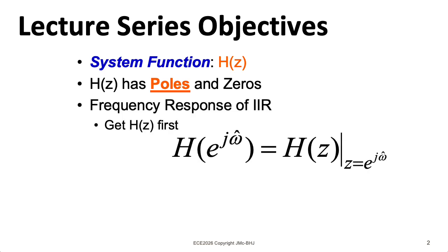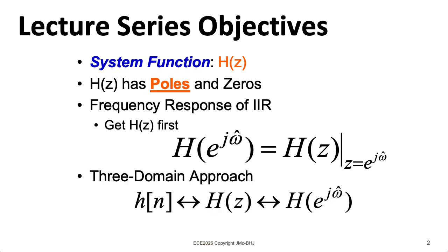Like with FIR filters, we can get the frequency response of an IIR filter by plugging in e to the j omega hat for z. We will explore this further in a future lecture, and the system function will give us a convenient way to relate time domain behavior with frequency domain behavior.